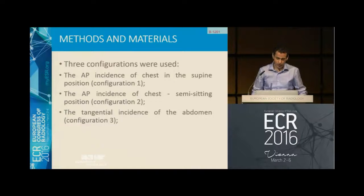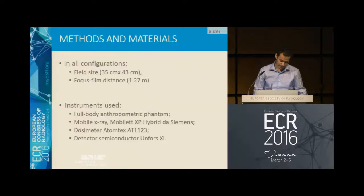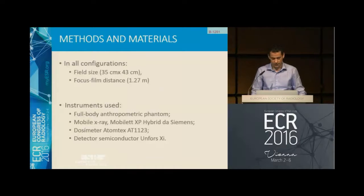Configuration one is an AP incidence of the chest in supine position. Configuration two is semi-seating, and configuration three is the tangential incidence of the abdomen. In all configurations, we used the same field size and focus-film distance.